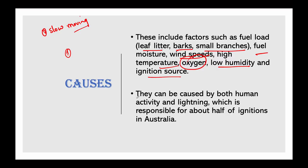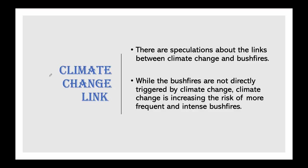Lightning is responsible for about half of ignitions in Australia, but the remaining fires have human origins. The reasons of human origin are often deliberate rather than accidental, though sometimes accidental fires also break out. In fact, police in Australia are investigating whether the fire in Sydney's upper north shore was deliberately lit by suspected arsonists. An arsonist is someone who commits the criminal act of deliberately setting fire to property.